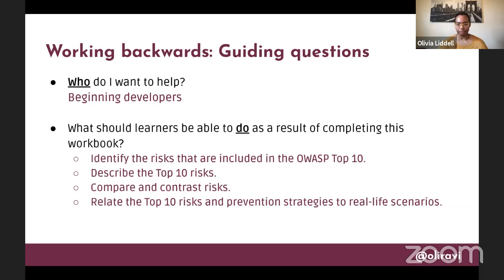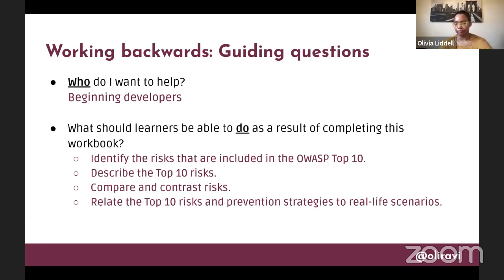I pulled out very specific objectives to guide me. I wanted learners to be able to identify the risks included in the OWASP Top 10 — a simple objective for developers who don't know what the Top 10 list includes. Next, go into describing what they are, because there's a difference between identifying what the risks are and actually describing them in your own words. The next level is being able to compare and contrast them. And the last part is to relate the Top 10 risks and prevention strategies to real-life scenarios.